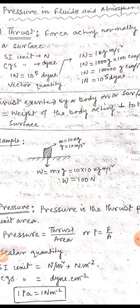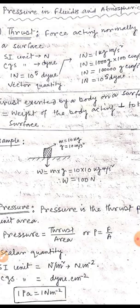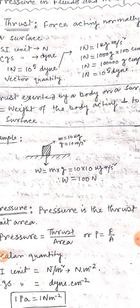Here is an example. I am taking a horizontal surface and on that surface a block of mass M kg. Acceleration due to gravity g = 9.8 m/s², but for numericals I have taken it as 10 m/s². So what will be the weight? Weight is equal to mass times g — that is 10 kg times 10 m/s² — so weight equals 100 Newton, and that is the thrust. Thrust exerted by a body on a surface is equal to the weight of the body perpendicular to the surface.